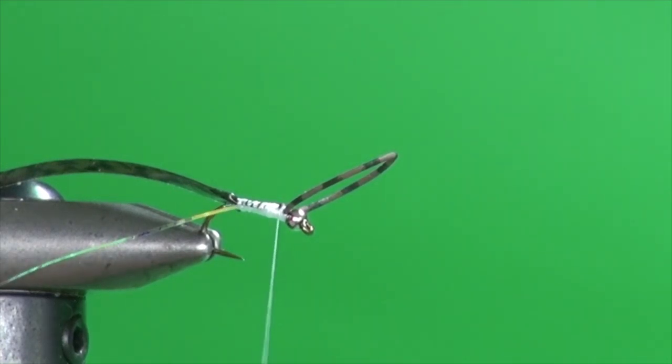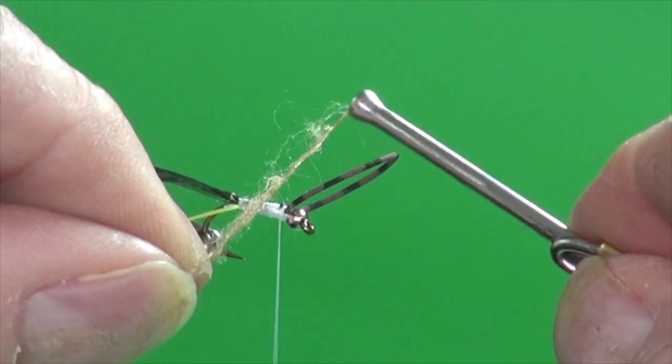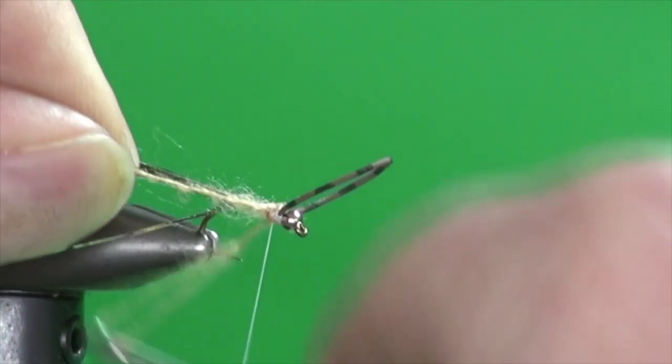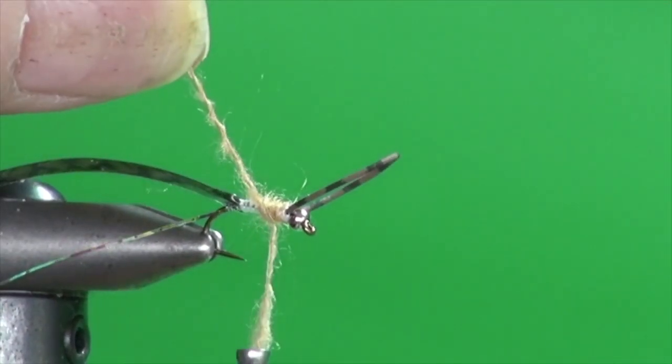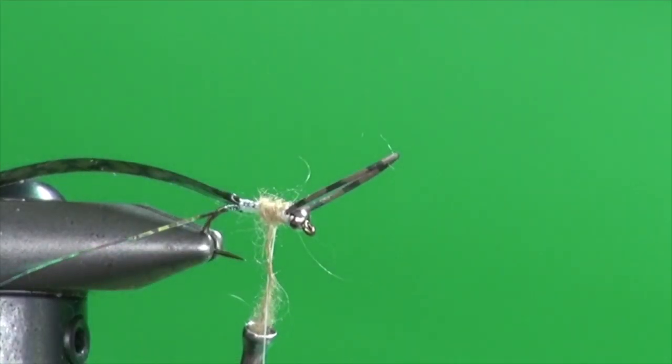I've used a uni stretch in the past, but I like the fuzzy nature of this yarn. And we're just going to start this yarn, just like we would tying thread directly behind the bead. Get a couple of wraps on. Just let that hang. Trim that. Unspin it.